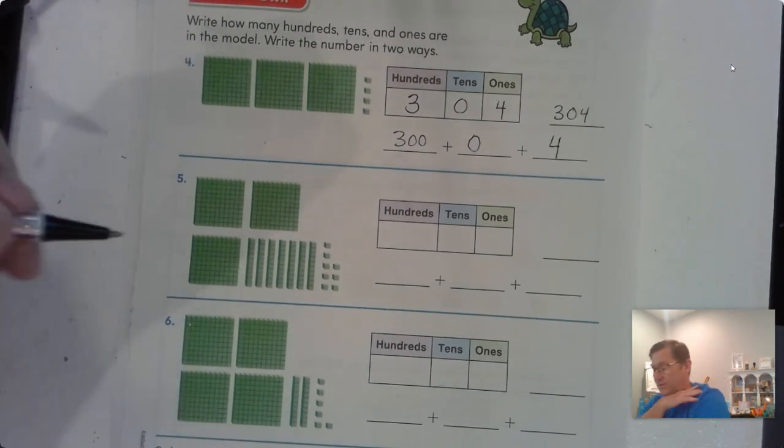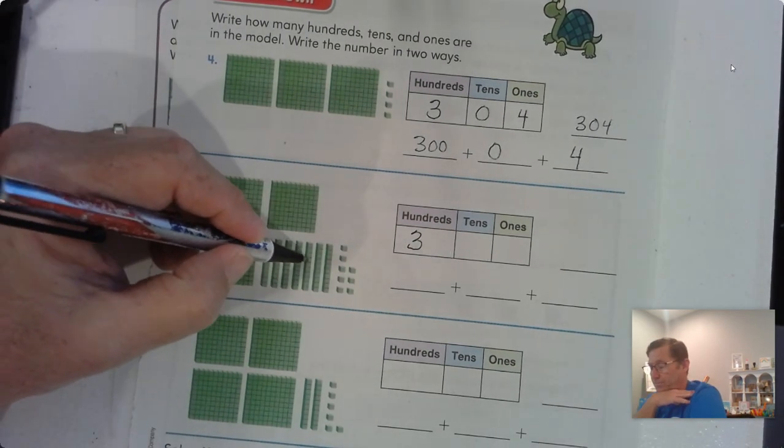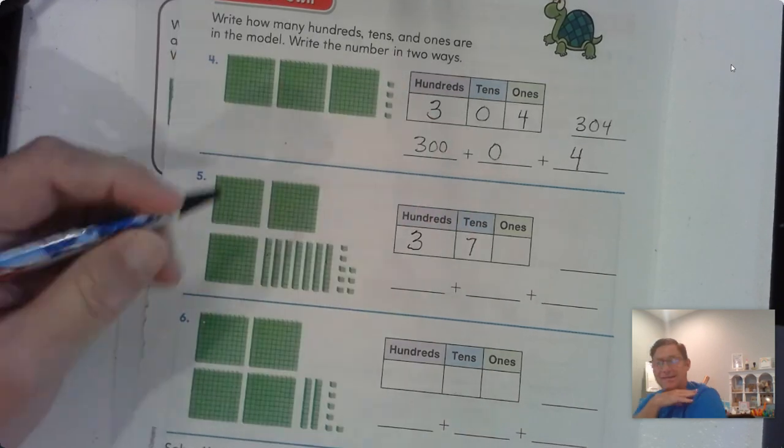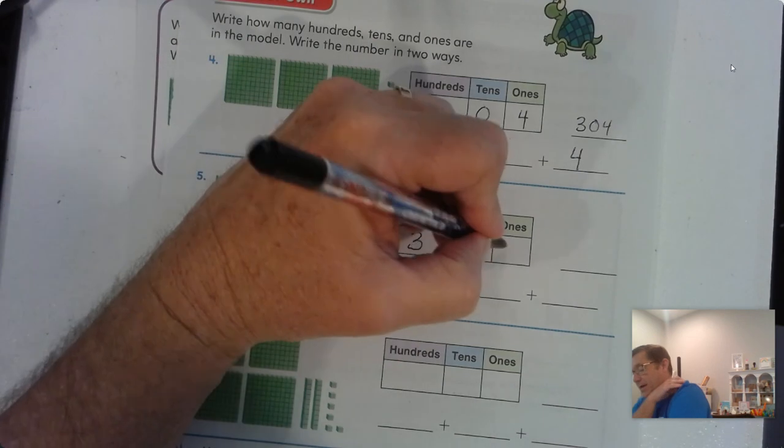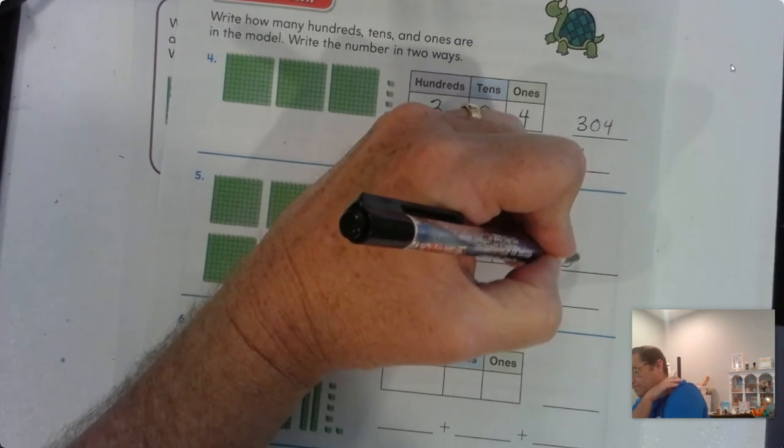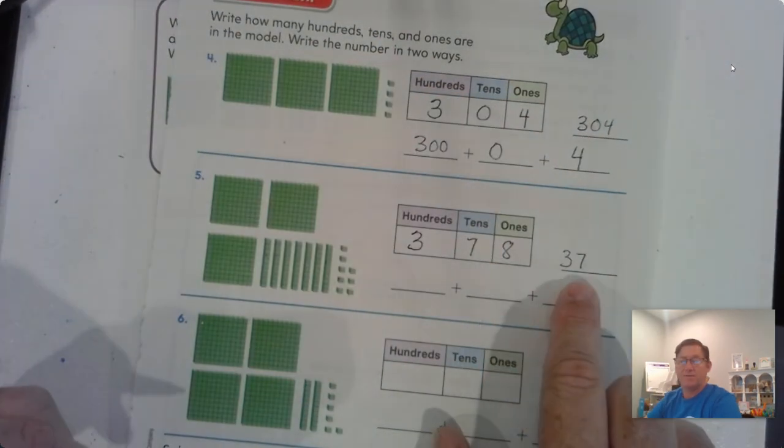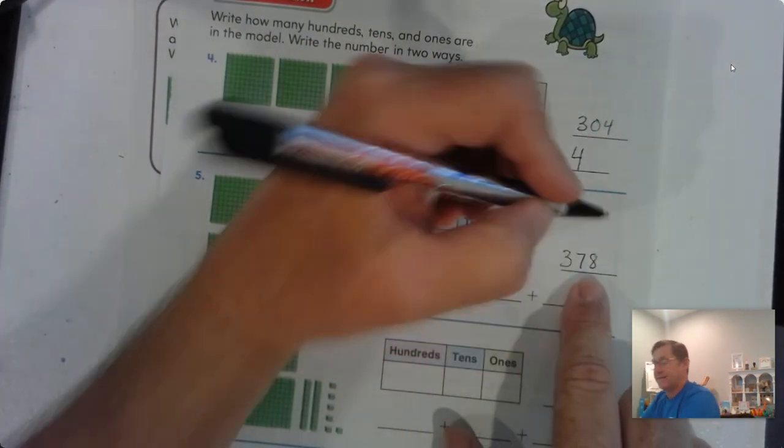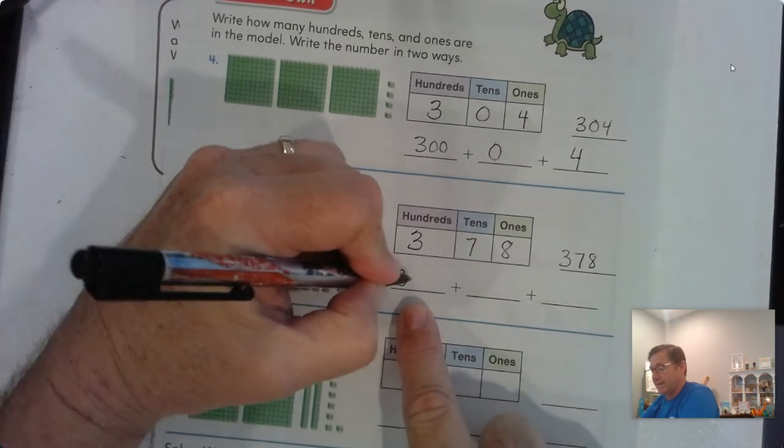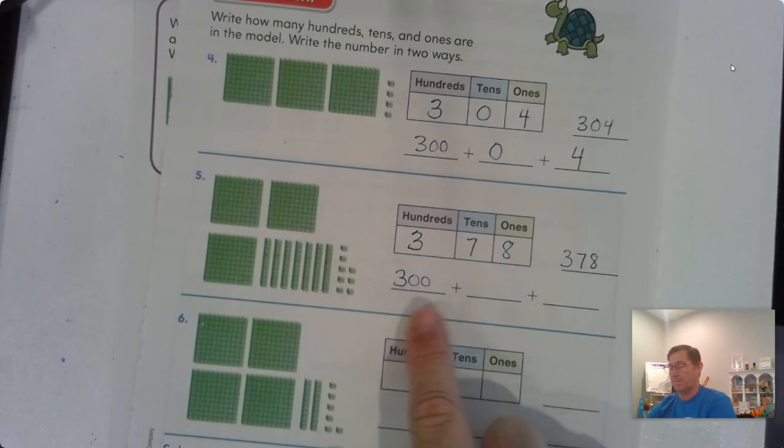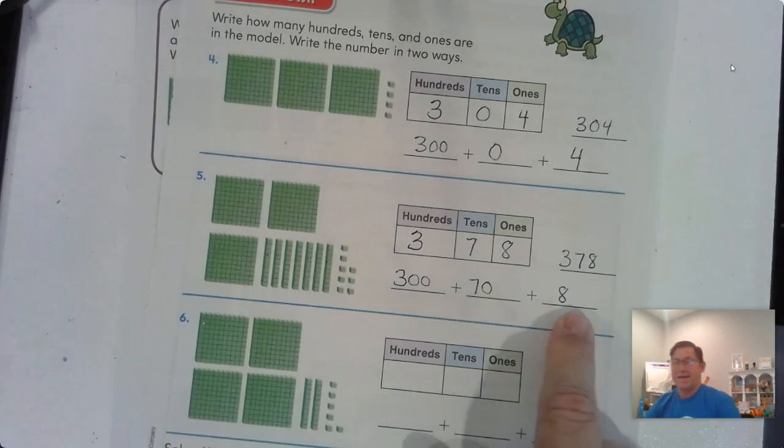Number 5. You should have come up with 3 hundreds, 7 tens, 8 ones. So there's a 3 in the hundreds place, there's a 7 in the tens place, and there's an 8 in the ones place. 378. We can write that as 300 plus 70 plus 8.